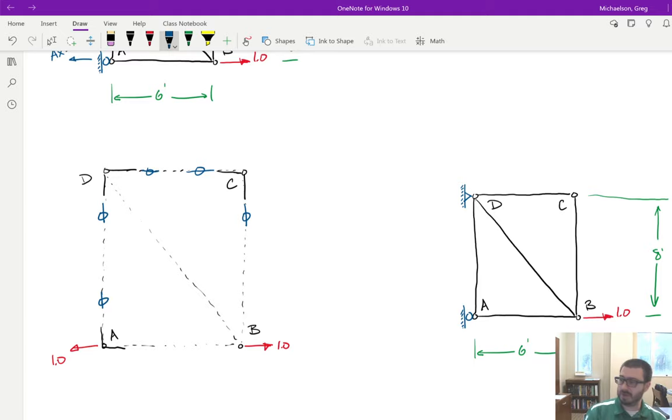And then the only member actually that carries load is this bottom member because if this is 1 to the left, if I look at joint A, that makes that 1 to the right. Our analysis of joint C tells us that this is a zero force member.